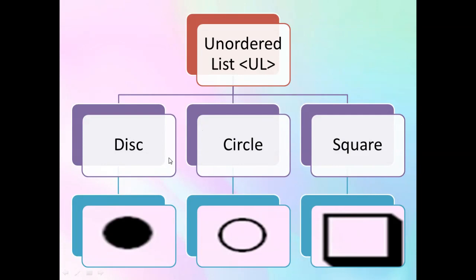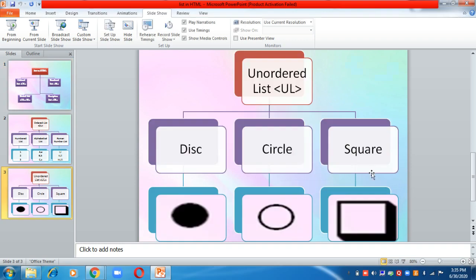Next is unordered list. In unordered list we again have three different types: disk, which uses filled circles as bullets; circle, which is hollow from inside; and square, which is just a square. These are the three different types of unordered list.